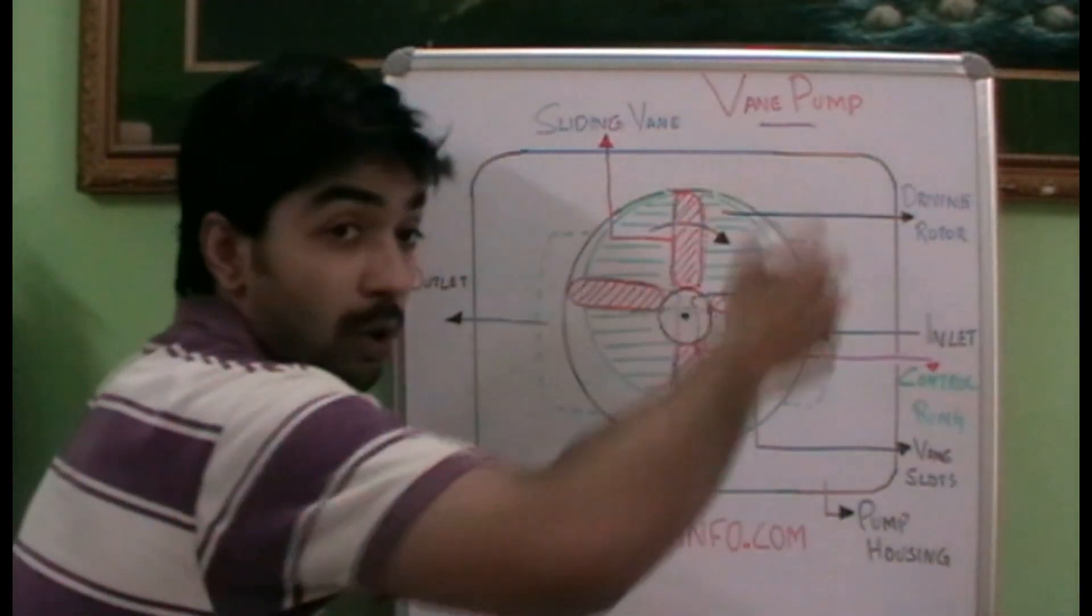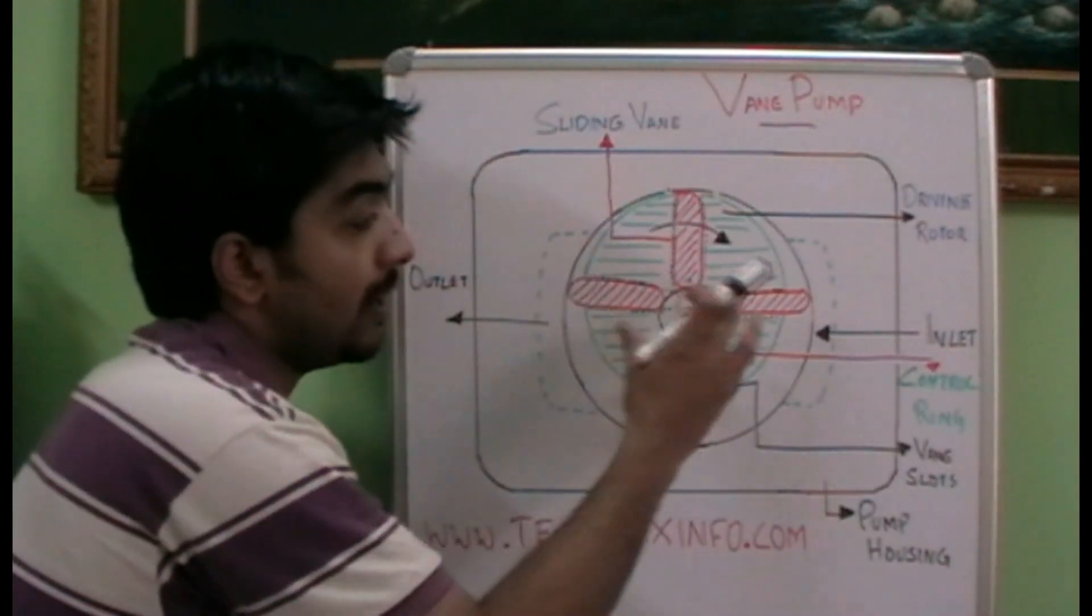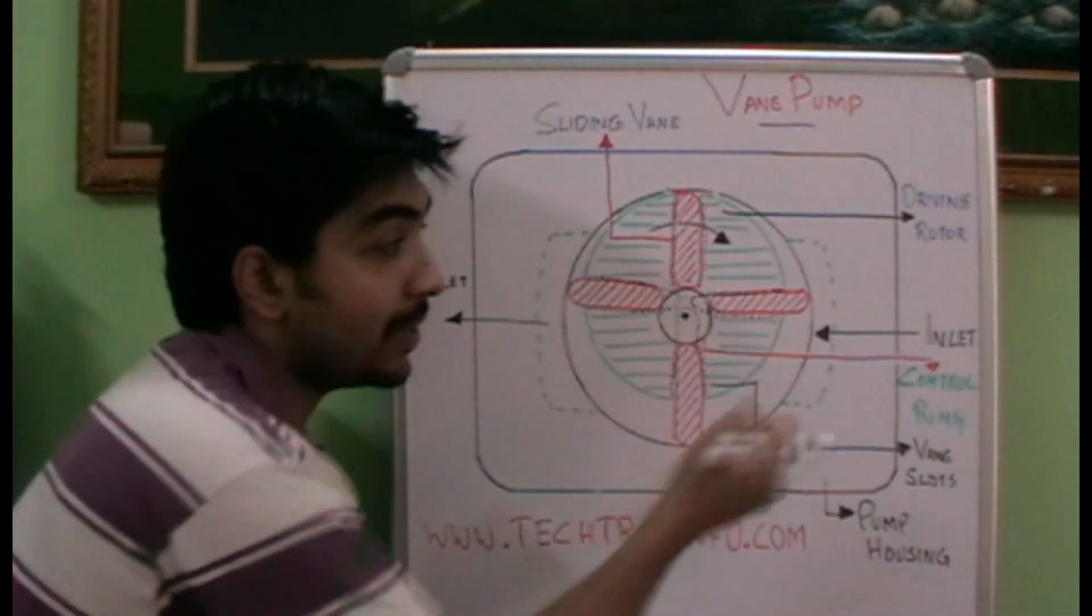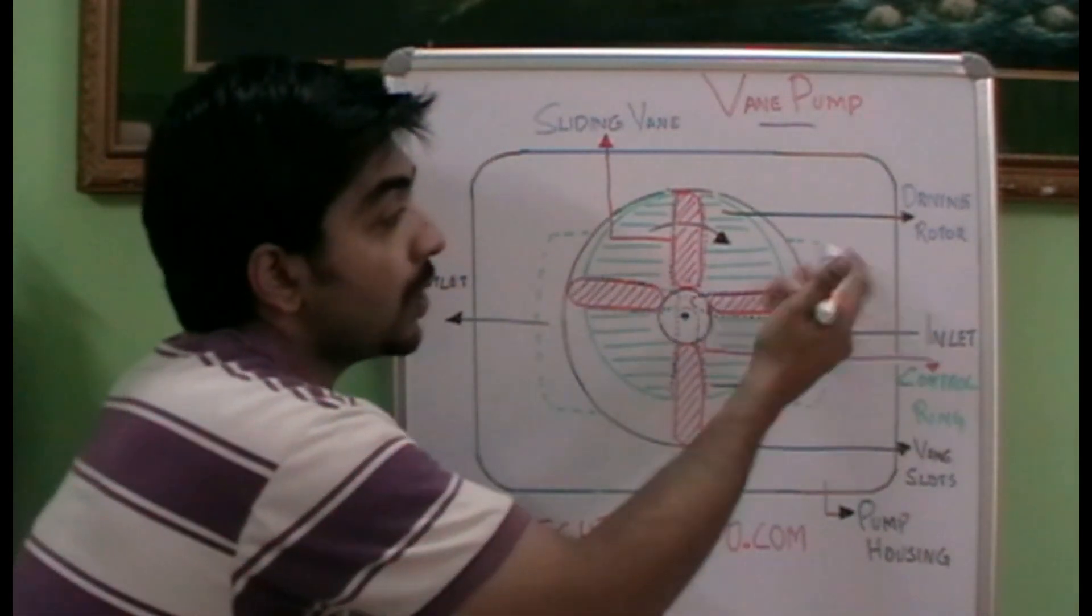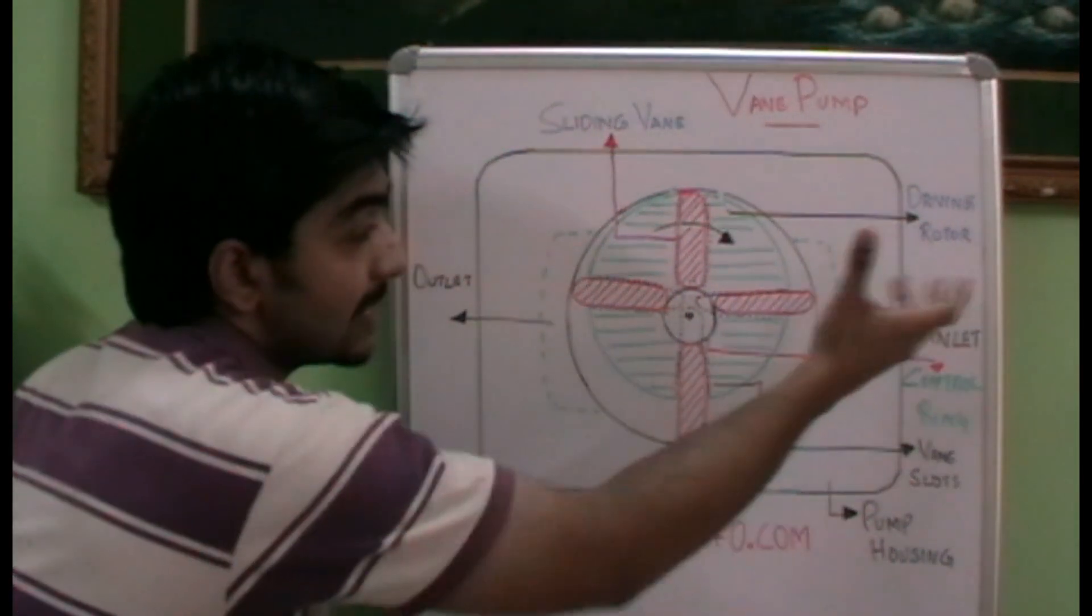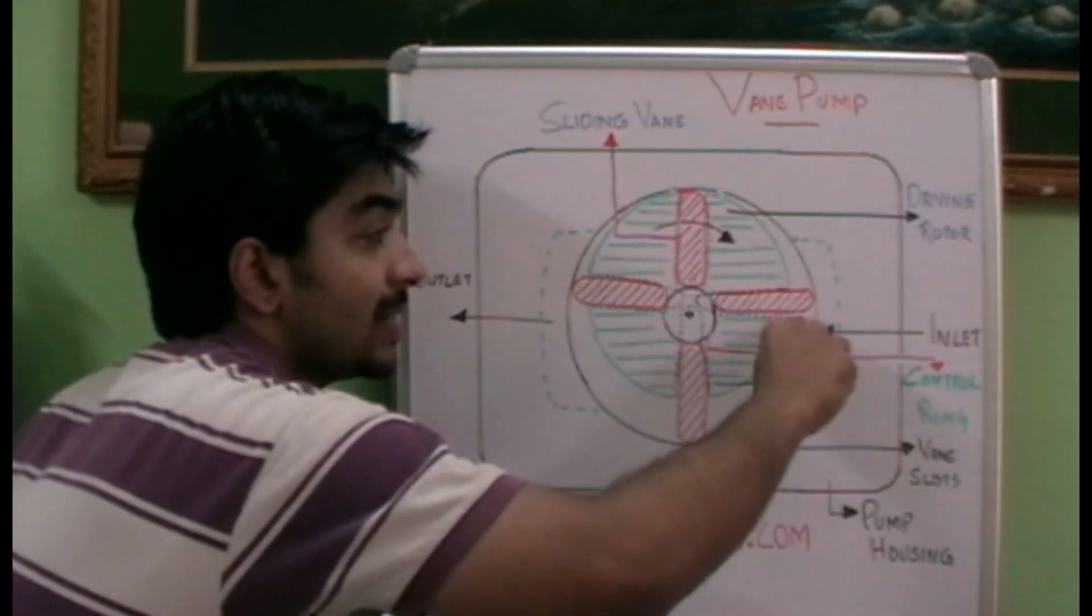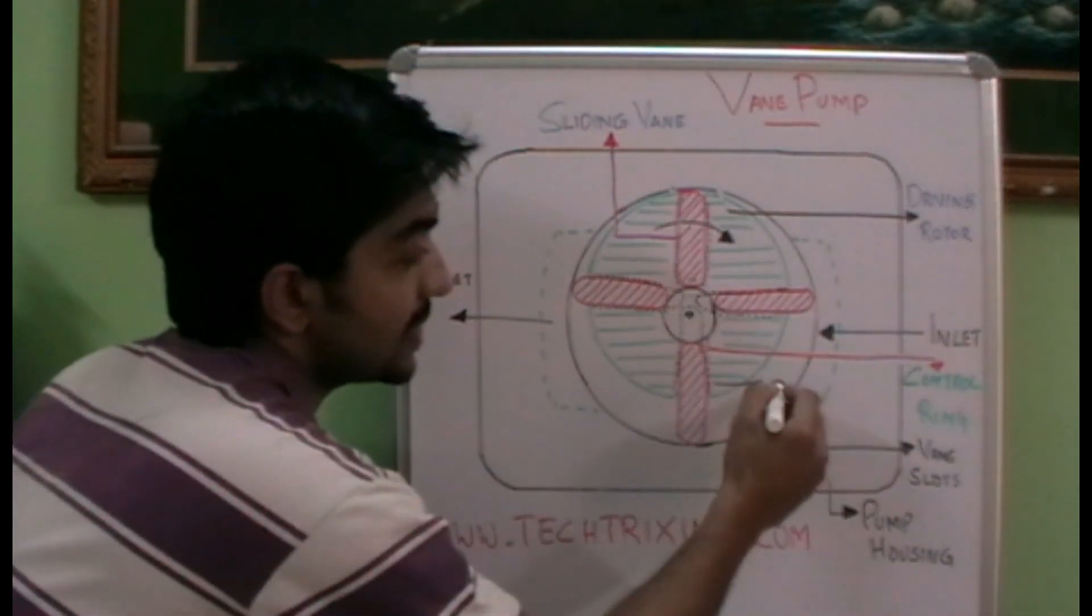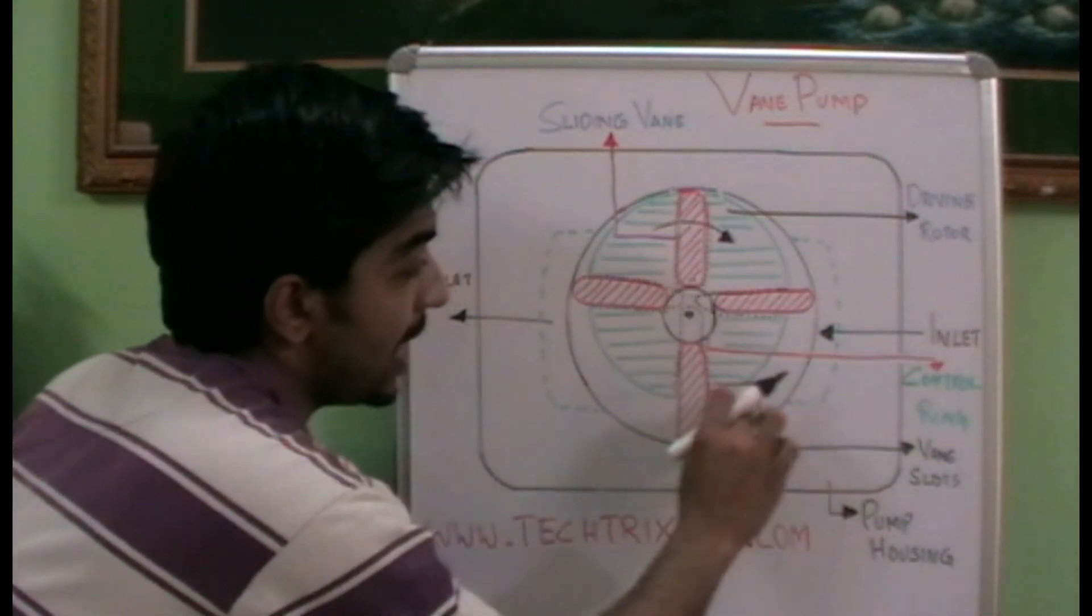So as it is rotating in clockwise direction, here the area is less and gradually it is increasing. So as suction is happening at this port, the oil or the fluid is sucked from this port and is swept by the help of these vanes which is trapped inside this container.